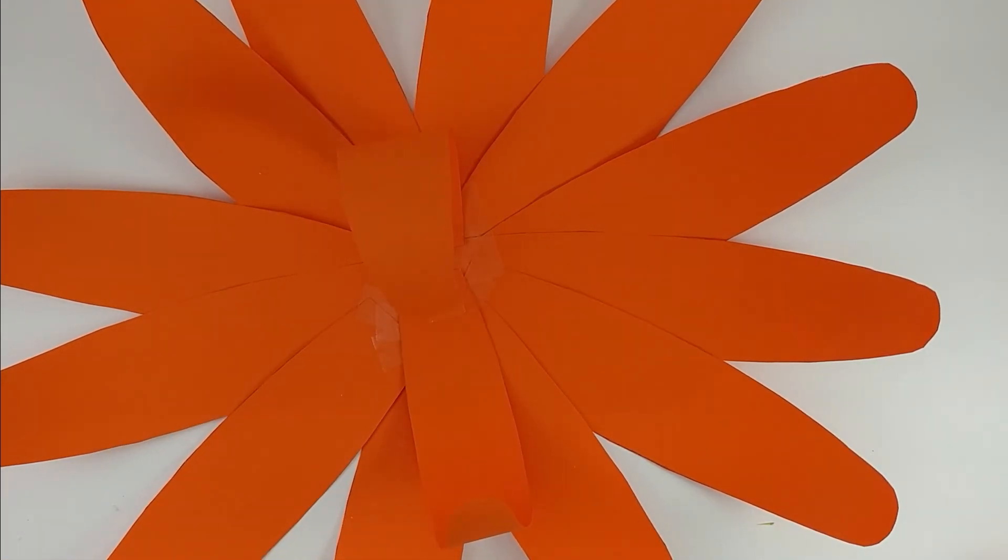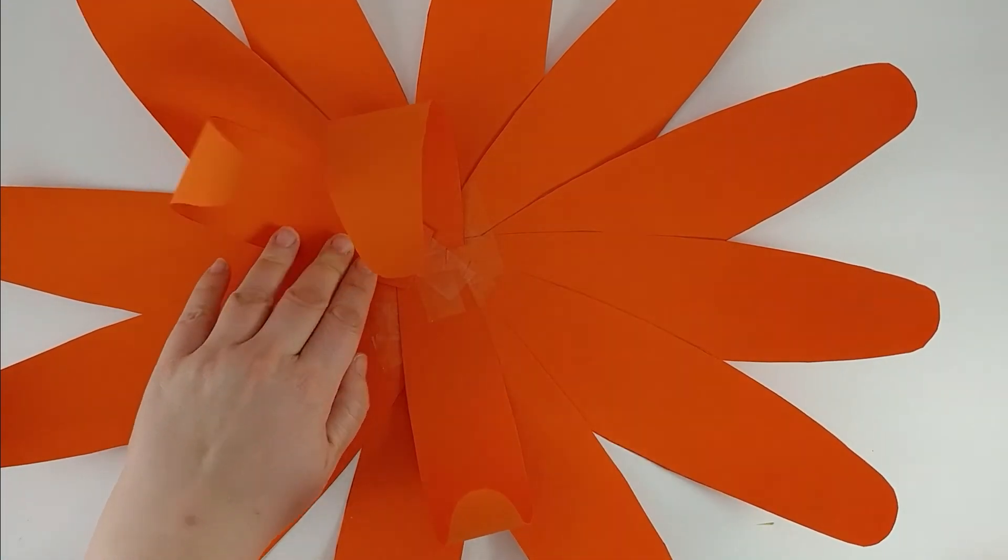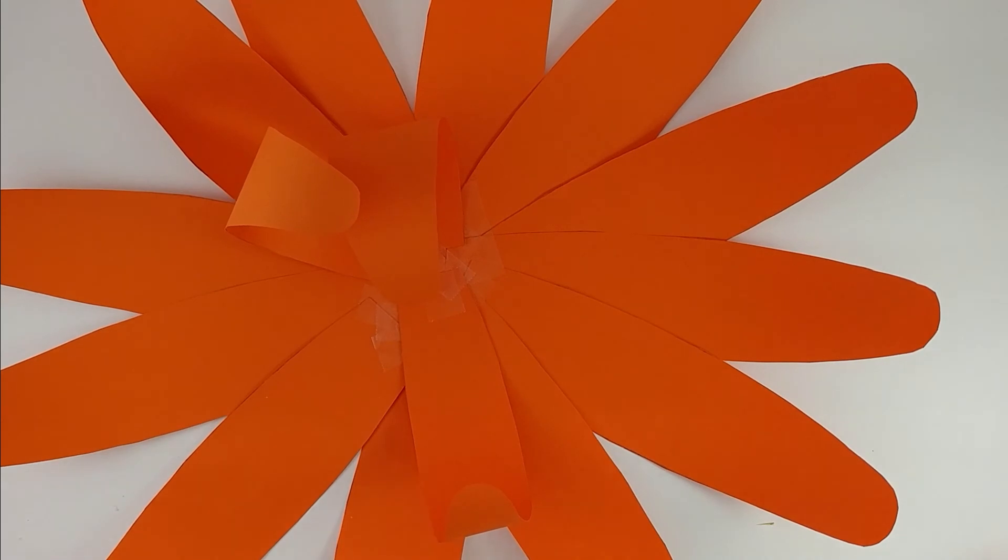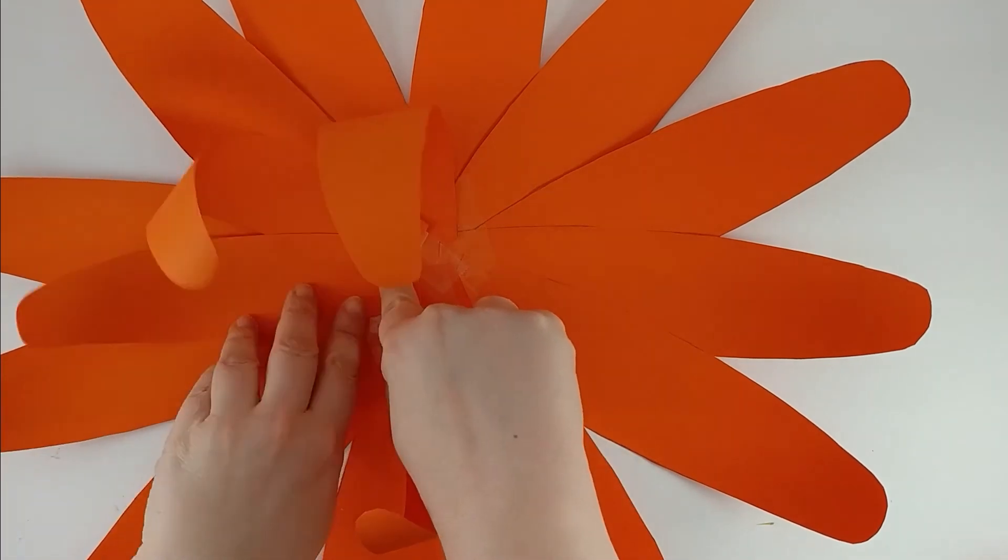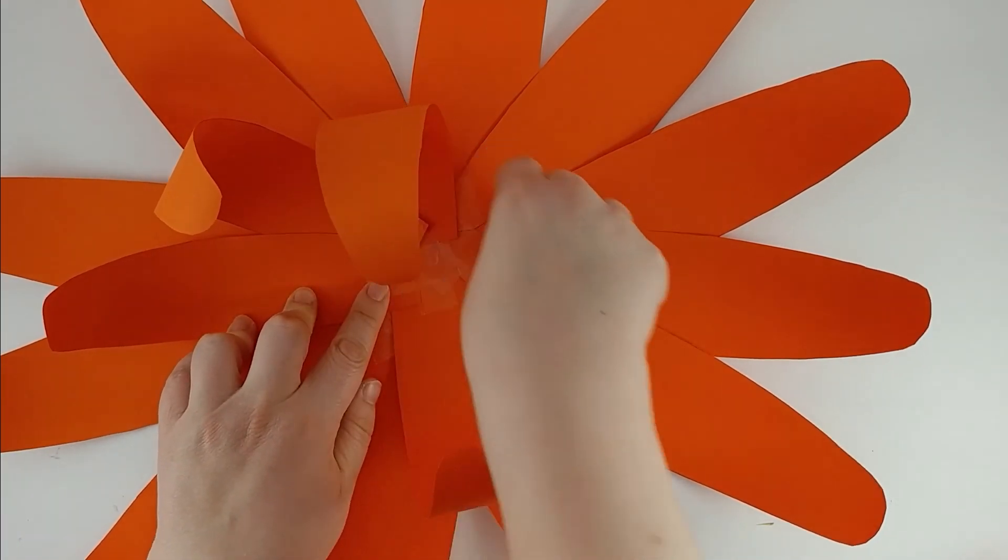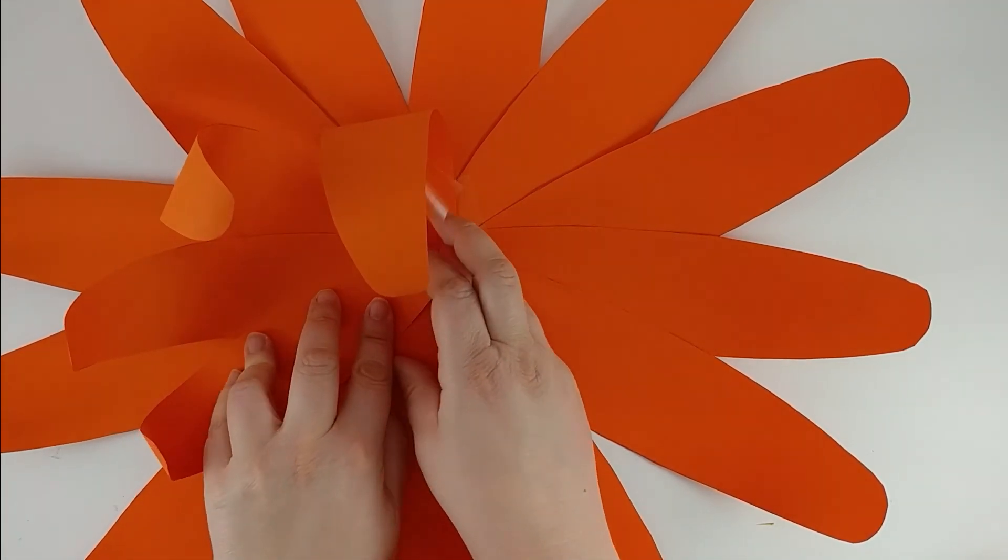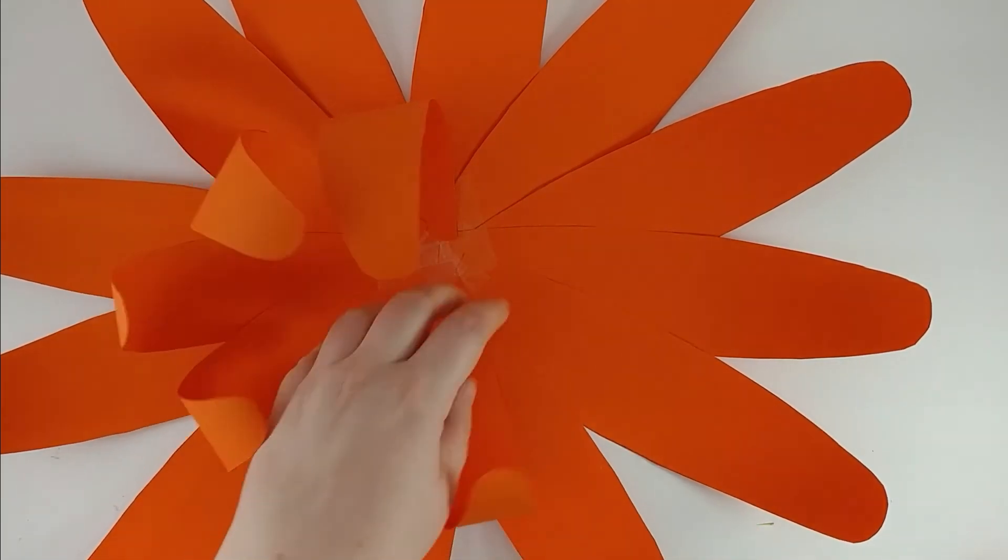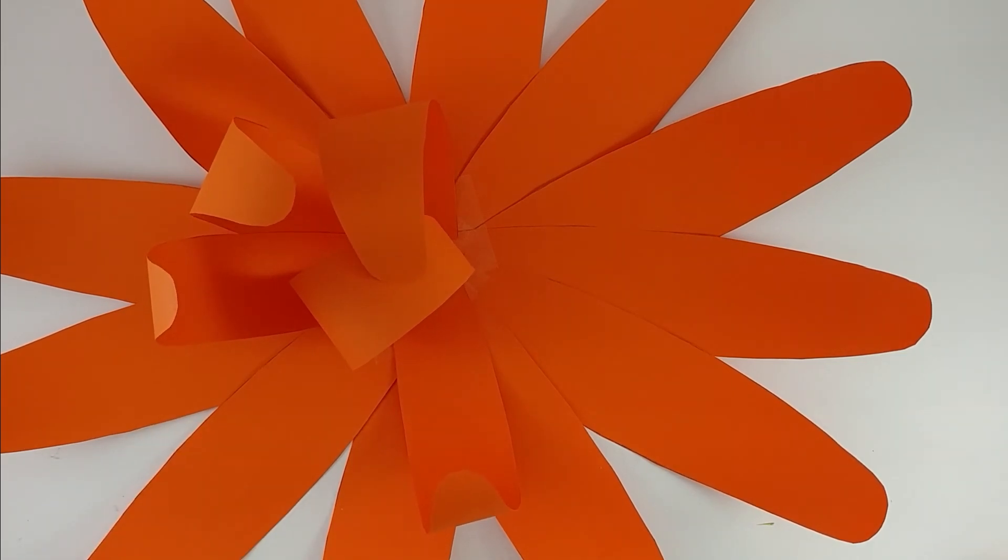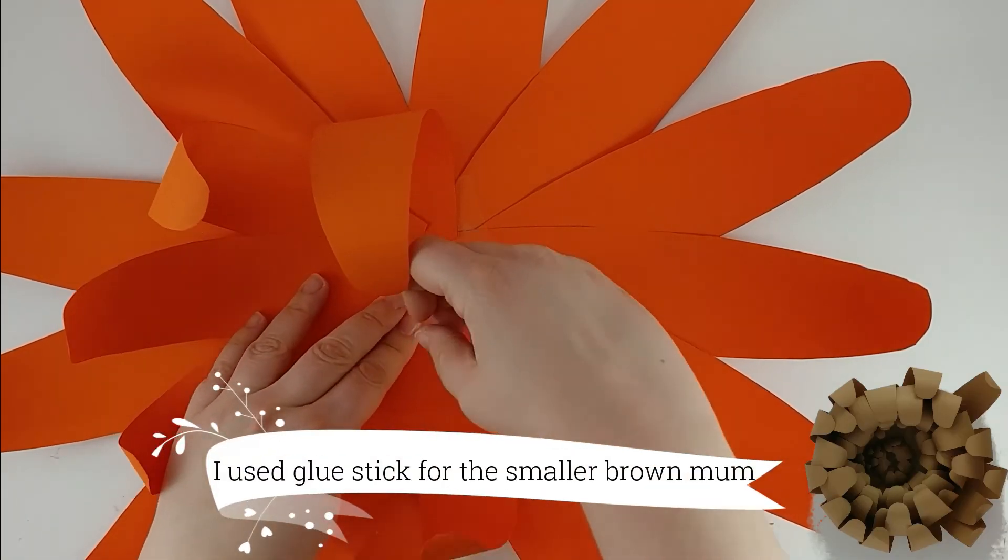When Noella does this, she does use white glue and she just puts in like a circle of white glue, sticks all the petals down, putting in more glue as needed. I'm just using tape because I have it and I can pull it up and reposition it if I need to.